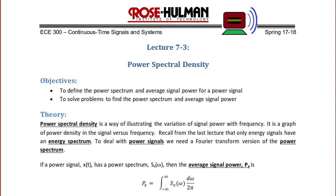If a power signal x(t) has a power spectrum S_x(ω), then the average signal power p_x is equal to the integral from negative infinity to infinity of S_x(ω) dω over 2π.